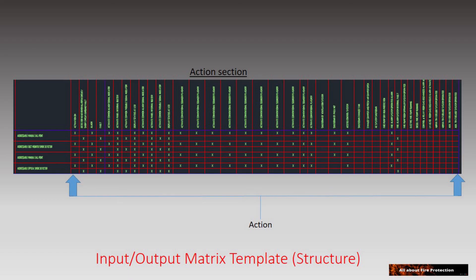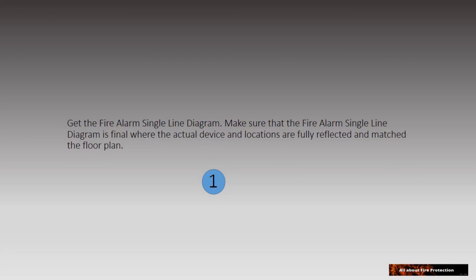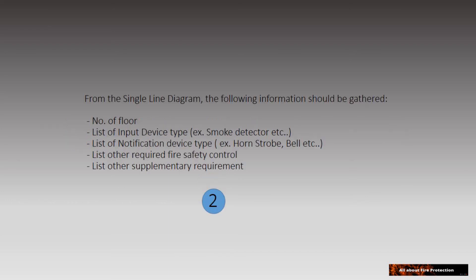In the action section, you simply mark with an X the required event as per the sequence of operation. Now let's proceed with the procedure. Step one: refer to the fire alarm single line diagram and make sure it is already coordinated and matches the plan drawings. Step two: gather all required information to fill in the input and output section, such as the number of floors, list of input device types, list of notification device types, list of required fire safety controls, and list of supplementary requirements.